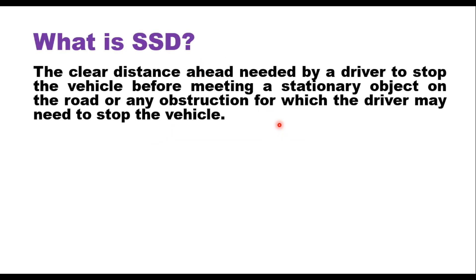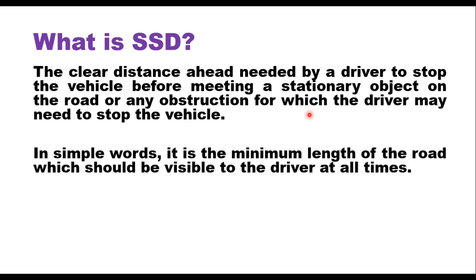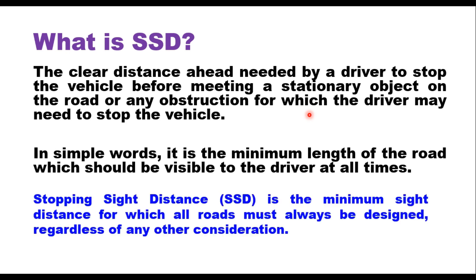Stopping sight distance is the clear distance ahead needed by a driver to stop the vehicle before meeting a stationary object on the road or any obstruction for which the driver may need to stop the vehicle. In simple words, it is the minimum length of the road which should be visible to a driver at all times. Stopping sight distance is the minimum sight distance for which all roads must always be designed, regardless of any other consideration.